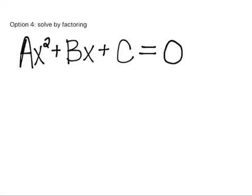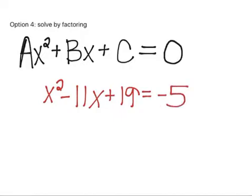The first equation on your choice board is actually x squared minus 11x plus 19 equals negative five. This is the exact equation that you have on your choice board. We cannot start this factoring process yet until we have it equal to zero.